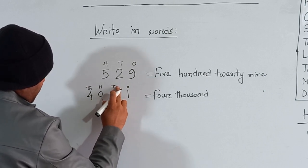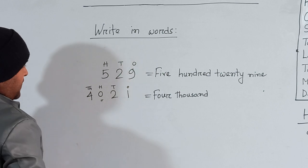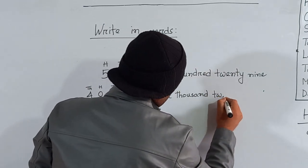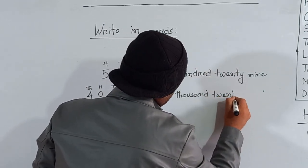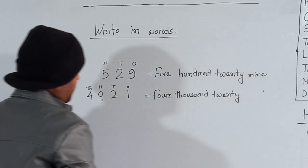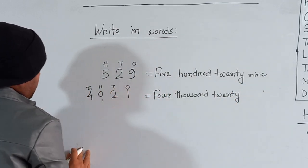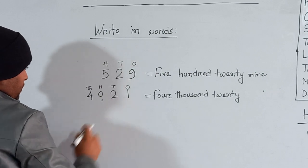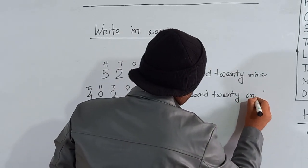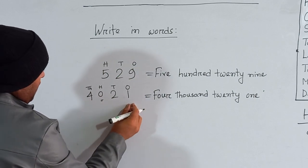Zero is in the hundreds place, so we can skip the hundreds place. Then here is two tens — two tens means twenty — T-W-E-N-T-Y, twenty. And one is in the ones place, so here it will be one. So four thousand zero two one is four thousand twenty one.